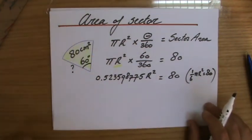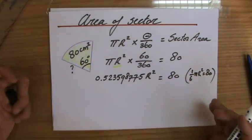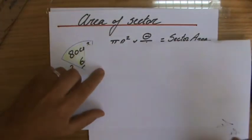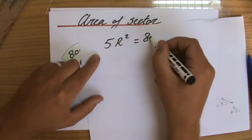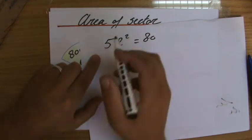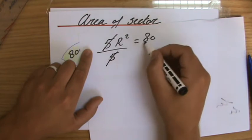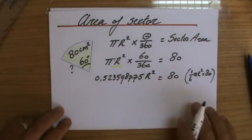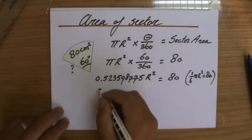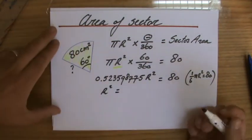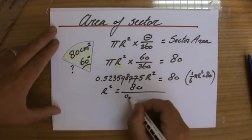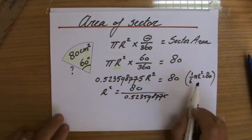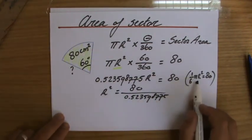How do we usually rearrange the formula? If this would be 5r² equals 80, how would you get rid of that 5? You would divide by 5 indeed, the inverse operation. Now I don't have 5, I have 0.523598775r², but I do the exact same operation. So r² equals 80 divided by 0.523598775, or perhaps 80 divided by a sixth of π which is a little bit shorter.